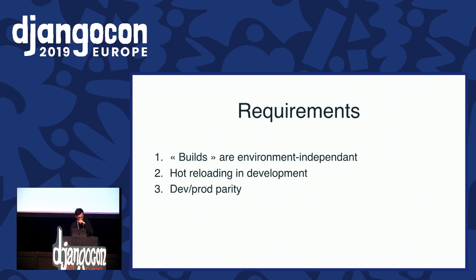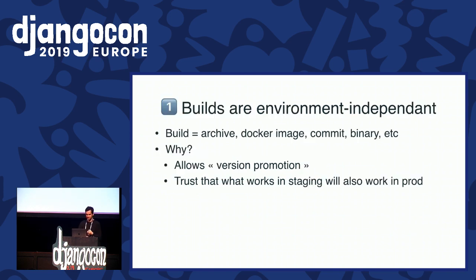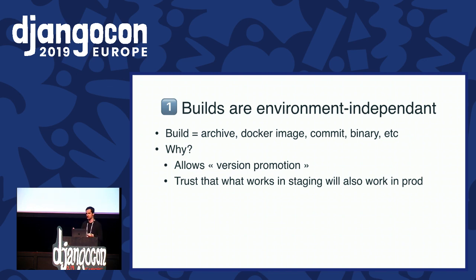My requirements are: I want environment-independent builds, I want hot reloading in development, and I want development and production parity. For environment-independent builds — what do I mean by build? I mean whatever code artifact you ship to a server when you deploy: it could be a file archive, a Docker image, a binary, a git commit, for example.